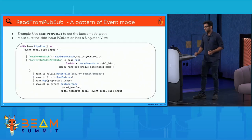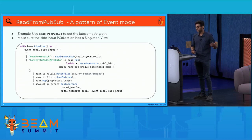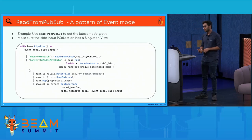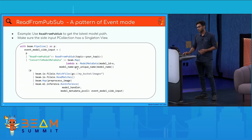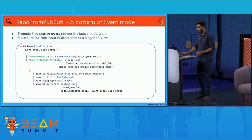For the event mode pattern, instead of watching a directory, you read from PubSub to get your model path, convert it to a model metadata object, and pass this event model side input to the model metadata attribute of run inference. Run inference will then take care of hot swapping the model.